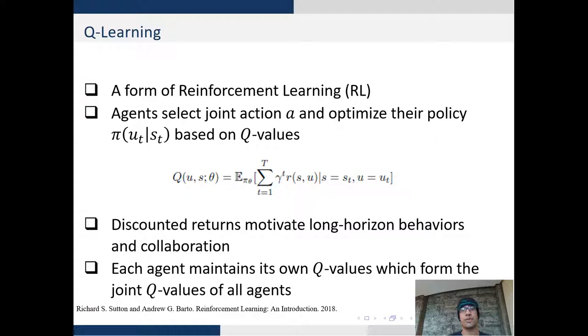Note that we use gamma here which is a discounting term to motivate long-horizon behaviors and collaboration. This is to make sure that the agents are not greedy with respect to short-sighted behavior. Each agent maintains its own Q-values which forms the joint Q-values for all agents.